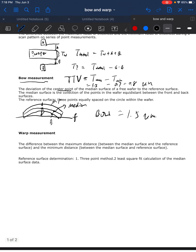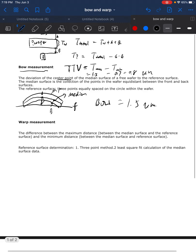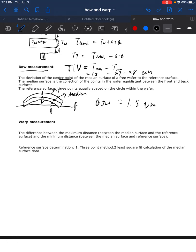The last concept is called warp. This is another definition that describes the distortion or shape variation of the wafer. The definition is the difference between the maximum distance and the minimum distance throughout the whole wafer. The maximum distance is between the median surface and the reference surface, and the minimum distance is also defined between the median surface and the reference surface.